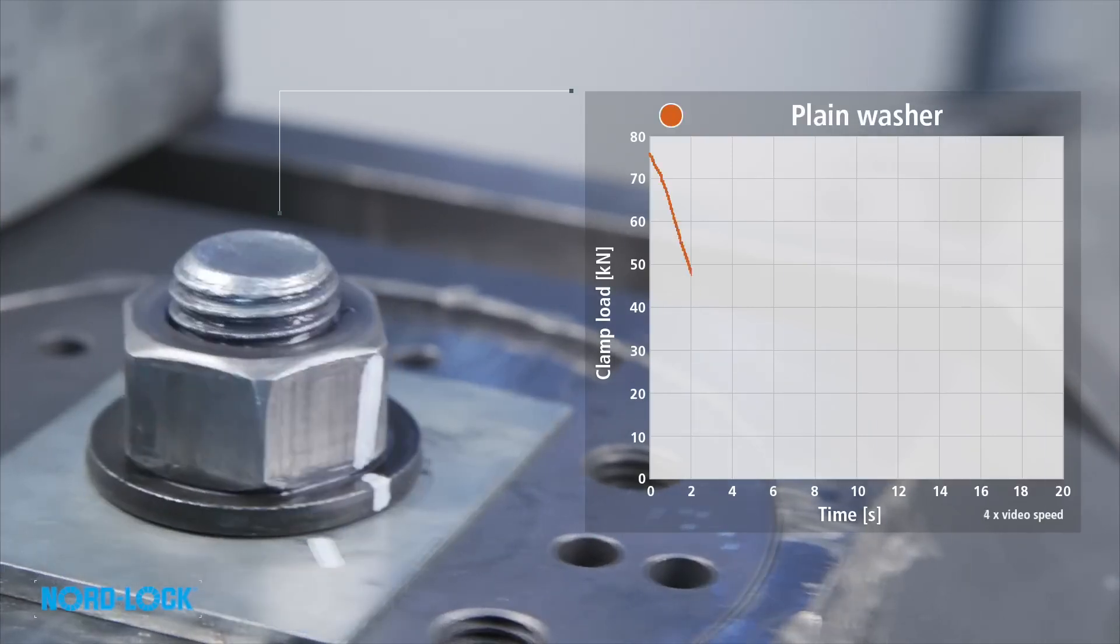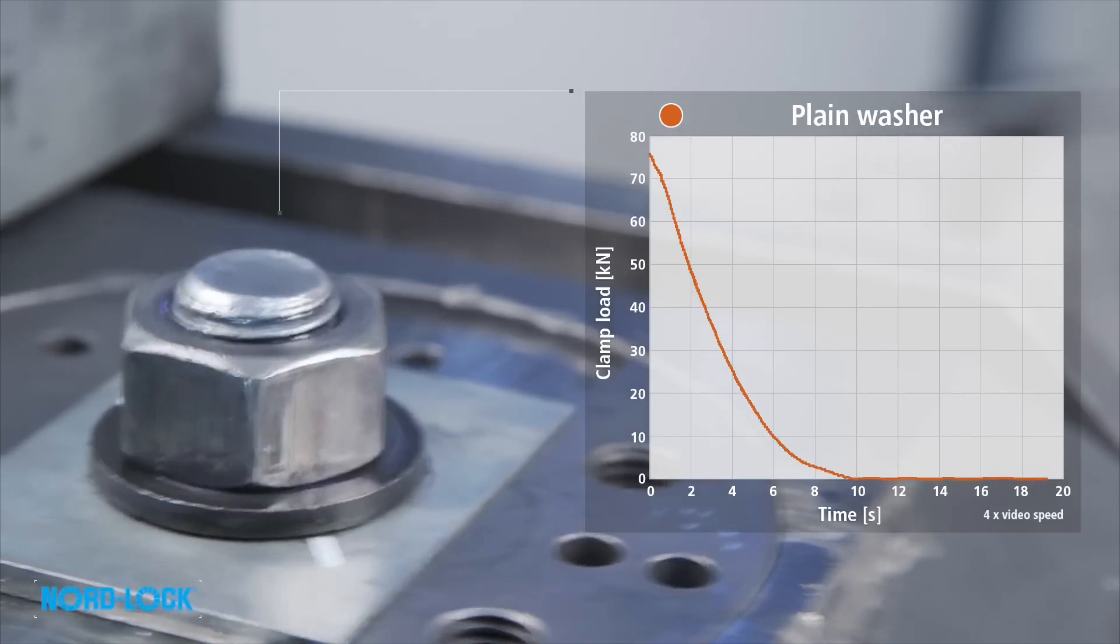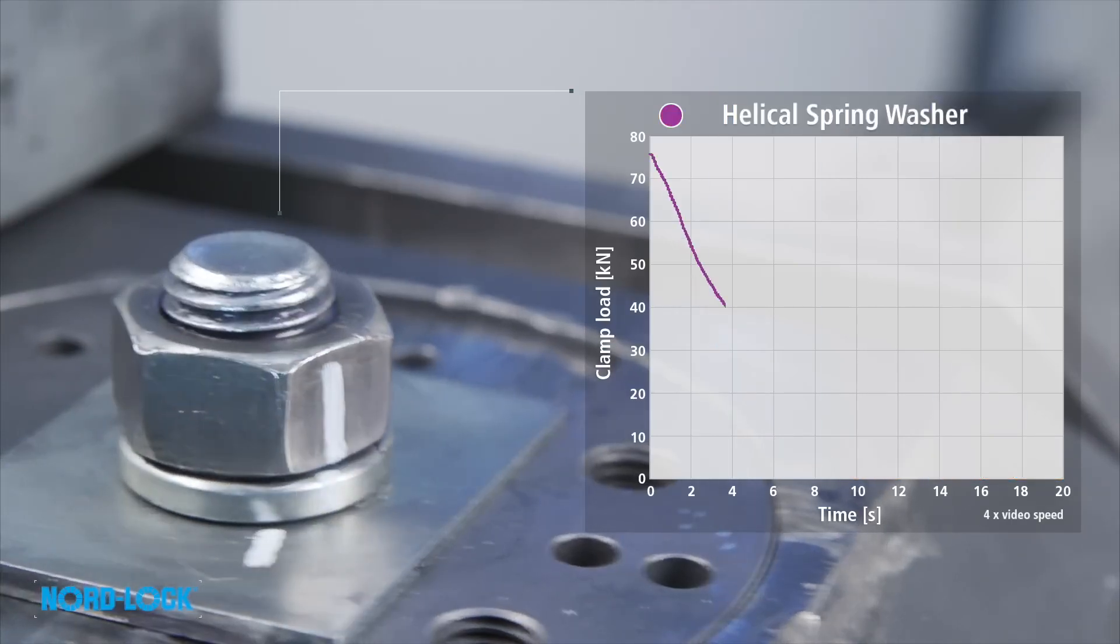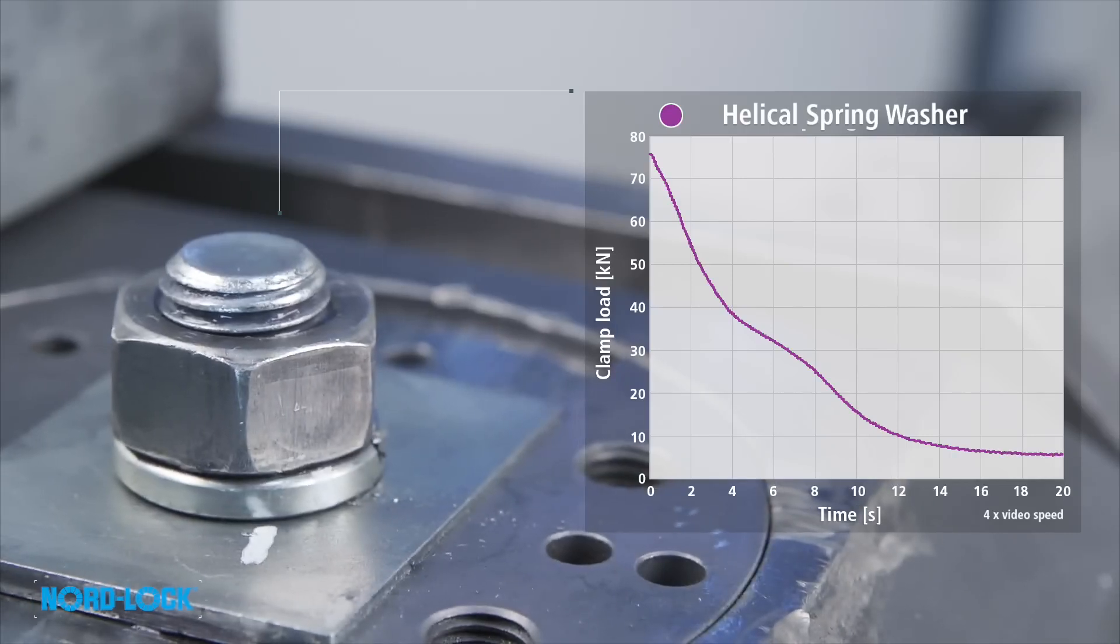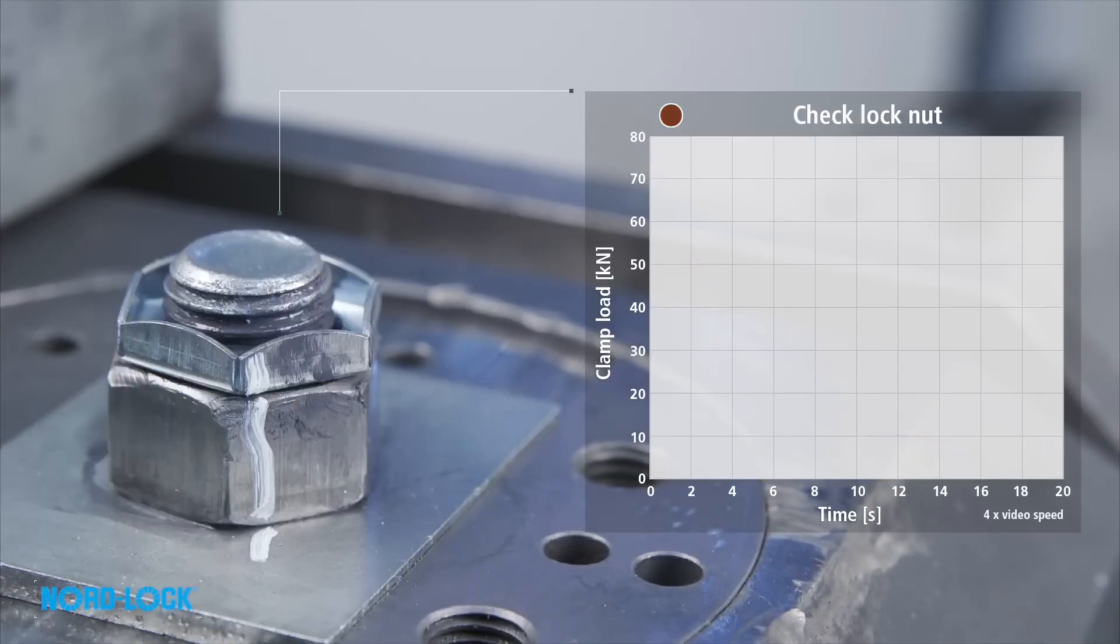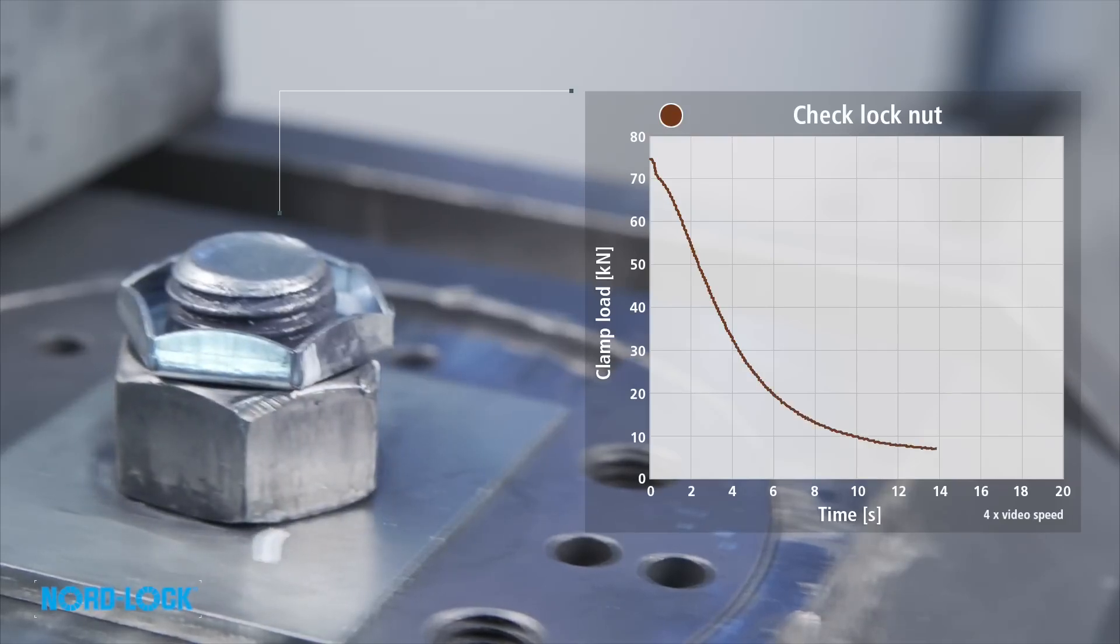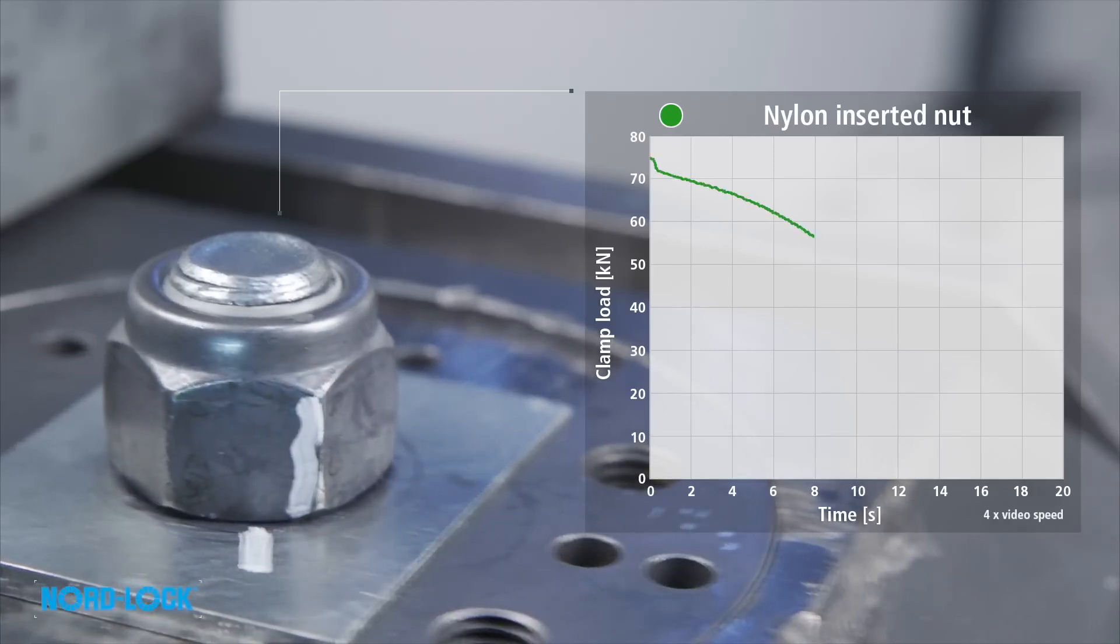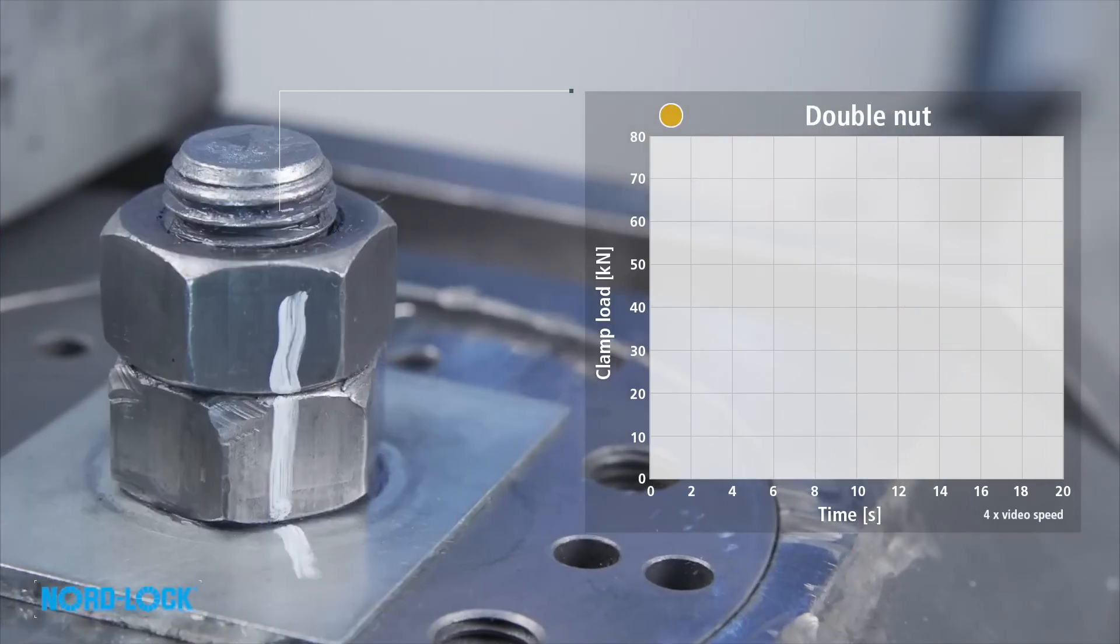We then expose a plain washer. A spring washer. A check lock nut. A nylon insert nut. And a double nut.